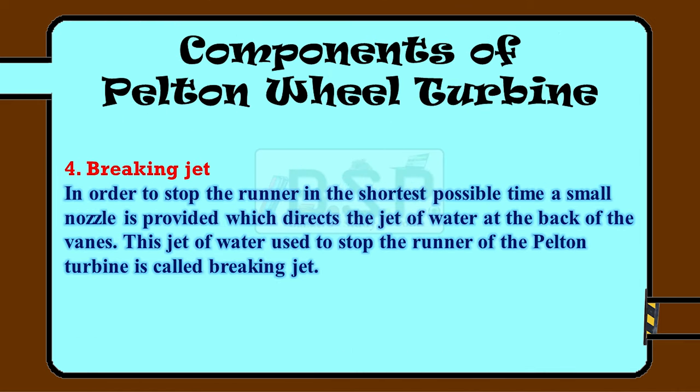The fourth part is the breaking jet. In order to stop the runner in the shortest possible time, a small nozzle is provided which directs the jet of water at the back of the vanes. This jet of water used to stop the runner of the Pelton turbine is called the breaking jet. The breaking jet is fixed at the opposite side of the blades.